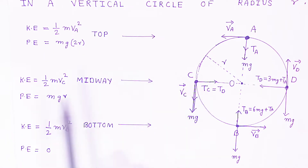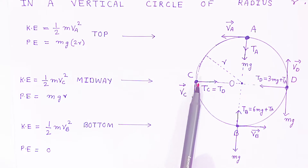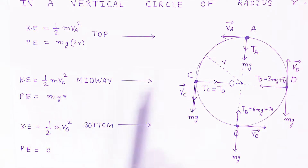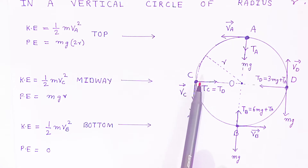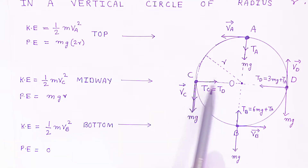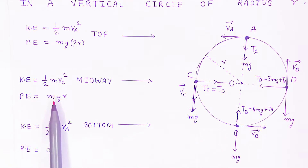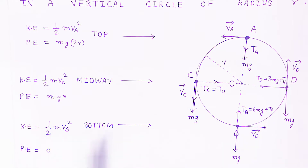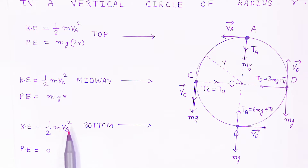At the midpoint C, the kinetic energy will be ½Mv²_C, which depends upon the velocity at point C. The potential energy at the midpoint is MgR, since only R is the height there. At the bottom, the potential energy is 0 and the kinetic energy is maximum, equal to ½Mv²_B.